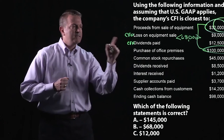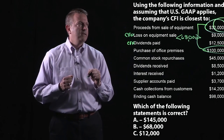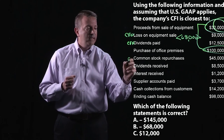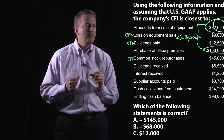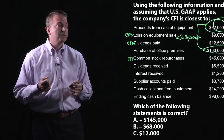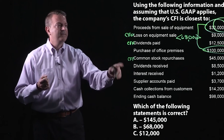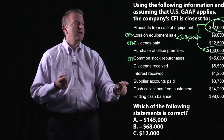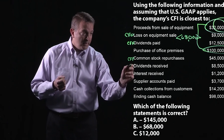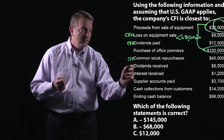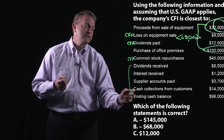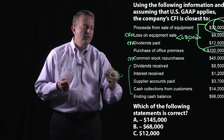What about common stock repurchases? That's cash flow from financing — that's how we finance our overall capital structure. What about dividends received, interest received, suppliers, cash collections, and ending cash balances? When I take all of those going all the way down to cash collections, those are all CFO. I'm sure some of you are sitting there thinking you don't get that, but we'll have to dig a little deeper on that one.